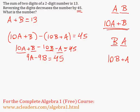Now I want to solve the system by substitution in this case. Here are our two equations: A plus B equals 13, and 9A minus 9B equals 45. What I'll do is subtract B from both sides of the equation, and I get A equals 13 minus B.